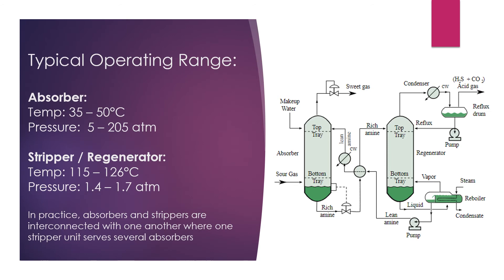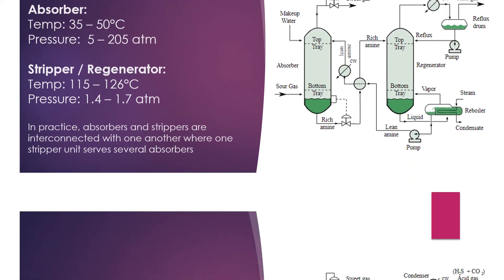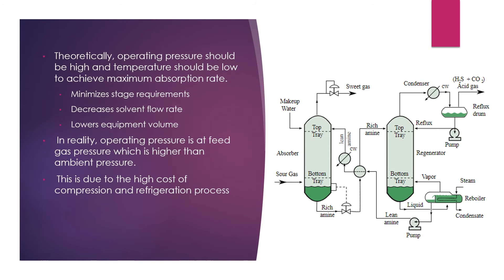Typical operating range. In this process, the absorber temperature is 35 to 50 degrees Celsius and the pressure is 5 to 205 atm. The stripper temperature is 150 to 126 degrees Celsius and the pressure is 1.4 to 1.7 atm. In practice, the absorber and strippers are interconnected with one another, where one stripper unit serves several absorbers. Theoretically, operating pressure should be high and temperature should be low to achieve maximum absorption rate. The advantages of this are minimized stage requirements, decreased solvent flow rate, and lower equipment volume.